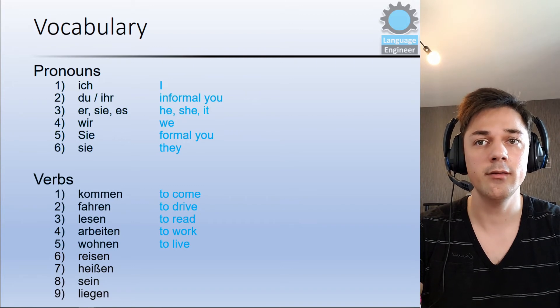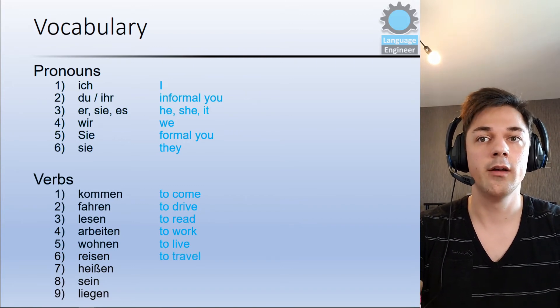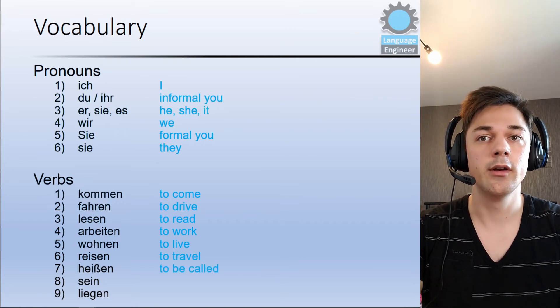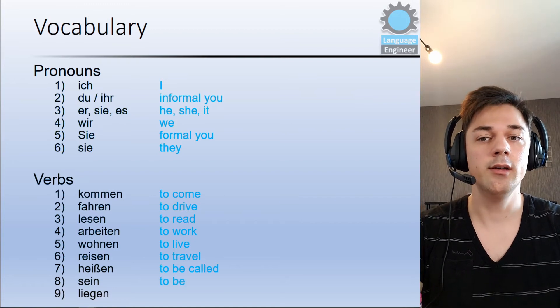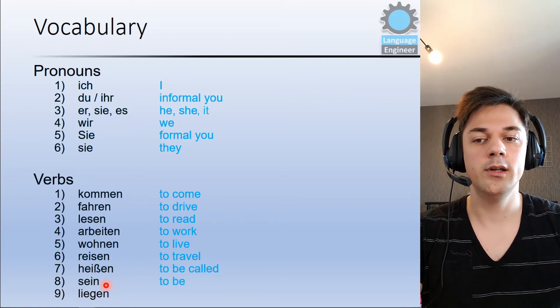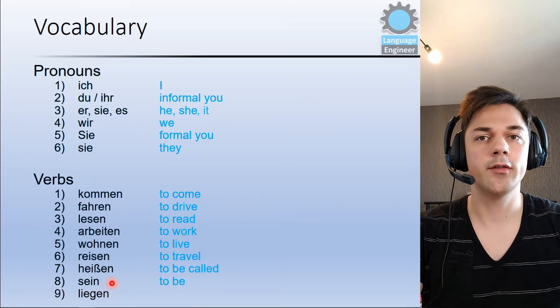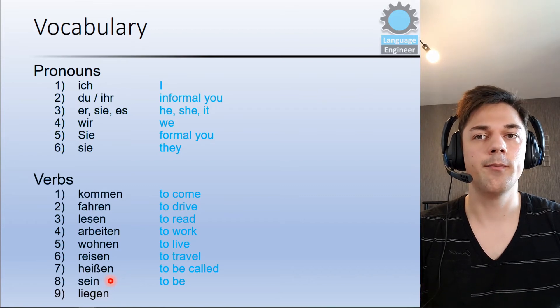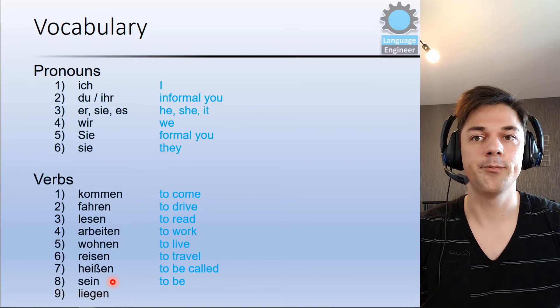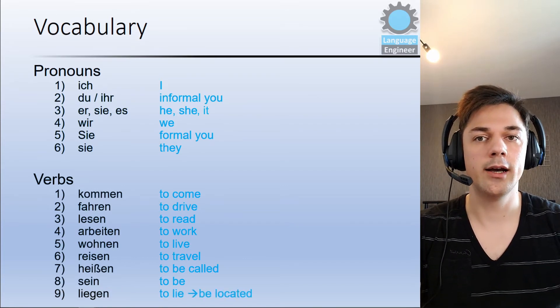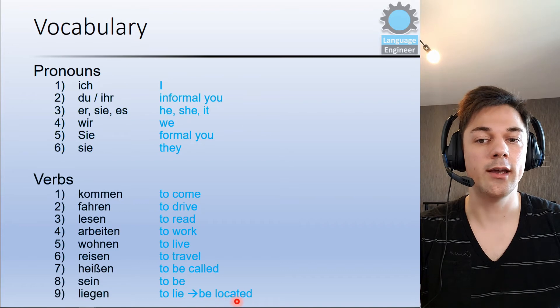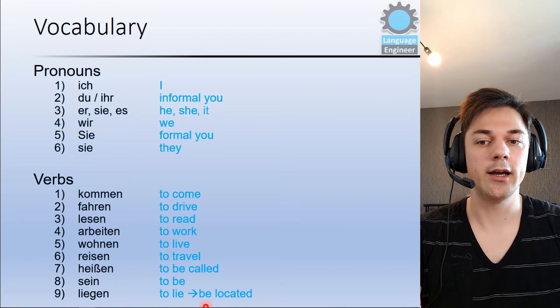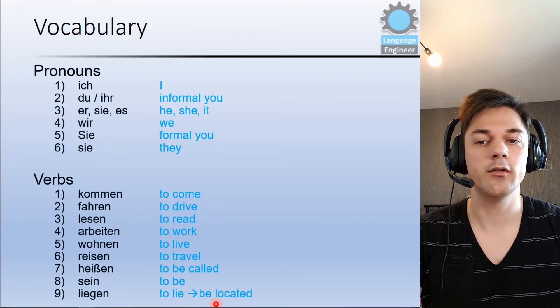Then we have reisen. Reisen means to travel. Then we have heißen. We have already learned that before, this is to be called. Then we have sein which is to be. And here you need to be aware that the conjugations of sein is a bit complicated because it's an irregular verb. And we will discuss this more in detail in another video. Then liegen means to lie, such as to be located. For example, Deutschland liegt in Europa. Germany lies in Europe. So actually it means here to be located.